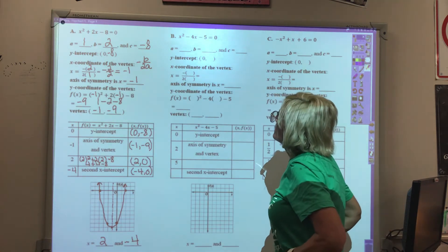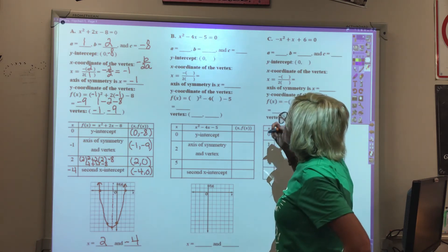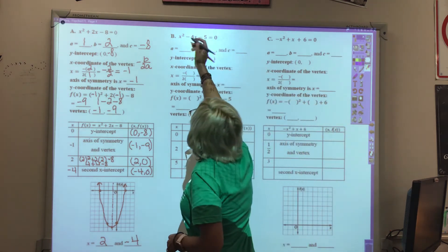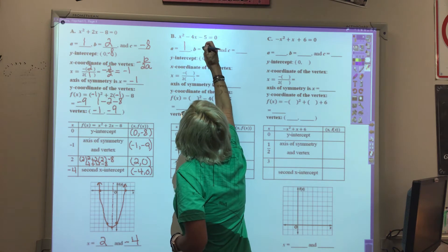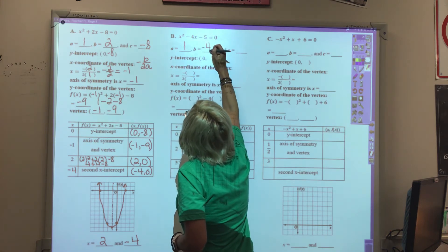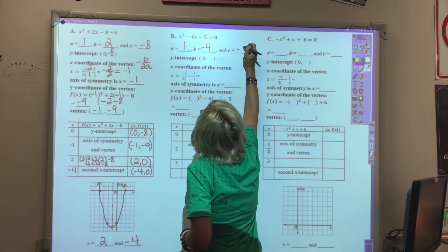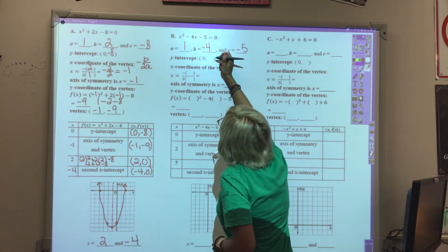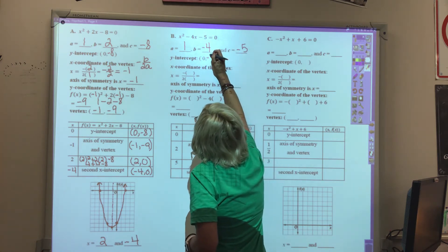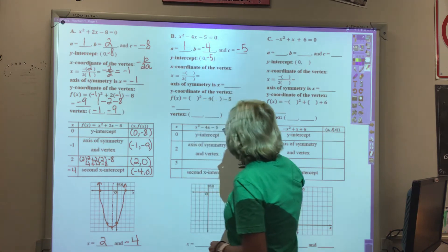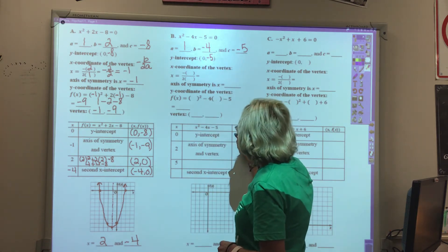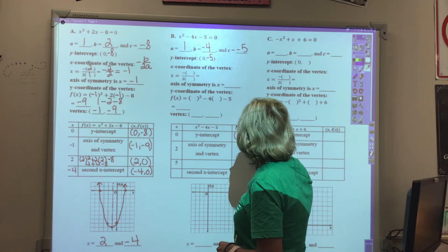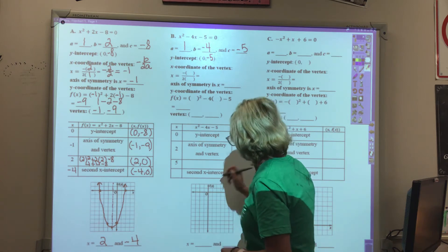On b, we'll label our a, b, and c. Again, our coefficients are 1, negative 4, and c is negative 5. Our y-intercept is at 0c, so 0, negative 5. Let me just go ahead and put that on the chart and on the graph.